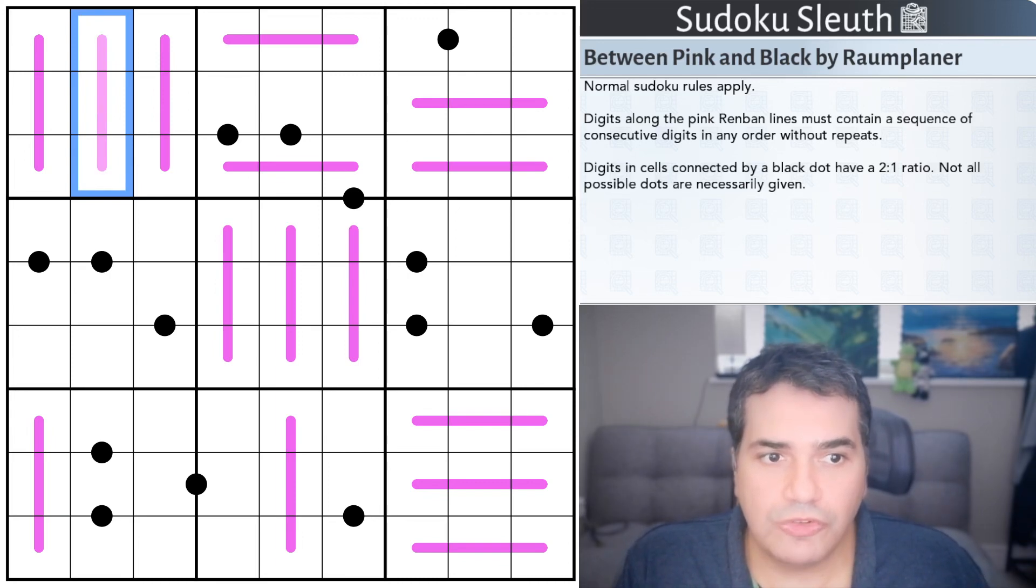Then we have digits in cells connected by a black dot have a two to one ratio. If this cell here was a two, this would have to be one or four so that one cell is double the other across this black dot. Not all dots are necessarily given, so you don't have to worry about negative constraints.